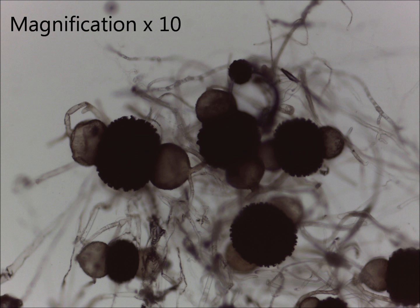This is a wet mount preparation of Rhizopus sexualis at times 10 magnification using the compound microscope. Remember, you can adjust the lighting as well as adjusting the focus so that you can see all the detail really nicely.